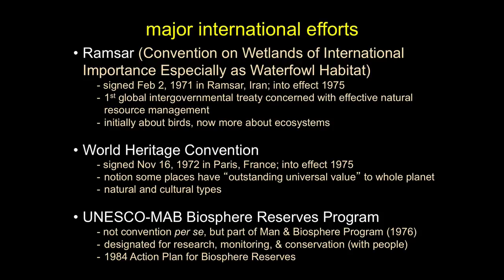Those first two are international conventions. The third example is the UNESCO Man and Biosphere (MAB) Reserve Program — this is a suggestion, a guideline, not a formally vetted international convention. It started in 1976 to provide guidance for setting aside protected areas for research and conservation, but people are fundamentally folded into the design. The current guidelines are the 1984 revision, which is what everybody uses.